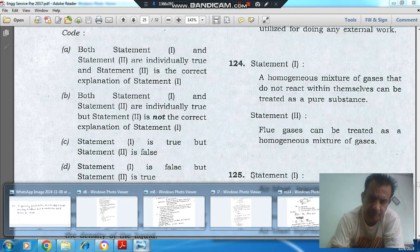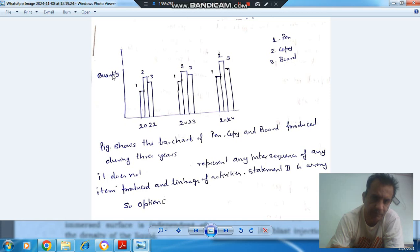So this is your bar chart in time series showing the quantities produced - quantities of pen, copy, and load produced by factories 1, 2, and 3 in different years: 22, 23, 24. So this bar represents the performance of pen, copy, and load. But it doesn't represent the relationship between pen, copy, and load, or the manufacturing of pen or any type of activity linking between activities.